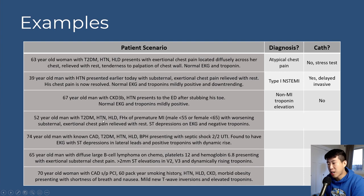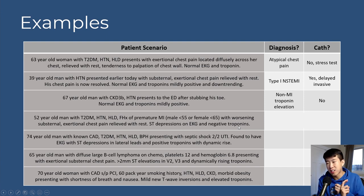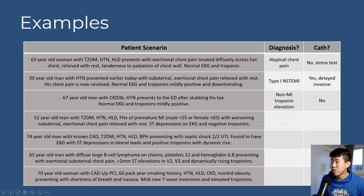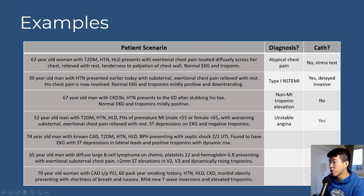Scenario 4: 52-year-old man with type 2 diabetes, hypertension, hyperlipidemia, family history of premature MI — first-degree relative under 55 if male or under 65 if female — with worsening substernal exertional chest pain relieved with rest, ST depressions on EKG, and negative troponins. Three of three criteria, concerning risk factors, no troponin elevation: this is unstable angina. Given multiple risk factors, an early invasive strategy within 24 hours is appropriate.